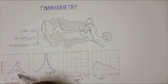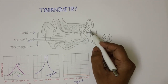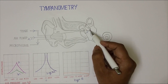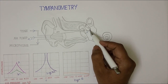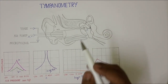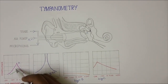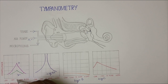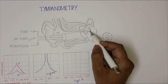In the Type AS curve — S means stiffer — the tympanic membrane is in its normal position, but the ossicles are fixed; that is, the stapes is fixed. This is seen in otosclerosis. When the stapes is fixed, the amplitude of vibration is seen at the normal ambient pressure, but it is not as high as the normal curve because the ossicles are fixed.